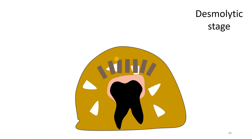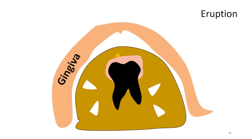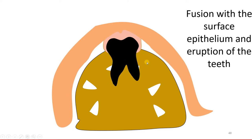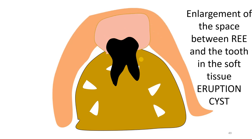Now let us assume that the dentigerous cyst is not formed and, because of the desmolytic activity, the tooth starts to erupt. As it erupts and comes out of the bone, the gingival tissue comes in close contact with the reduced enamel epithelium. As it contacts the reduced enamel epithelium, it fuses to form an epithelial conglomerate. At this particular site, if the cyst develops and enlarges, it gives rise to an eruption cyst — which is nothing but a dentigerous cyst occurring in soft tissue.